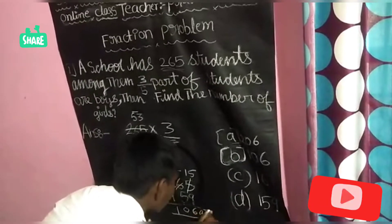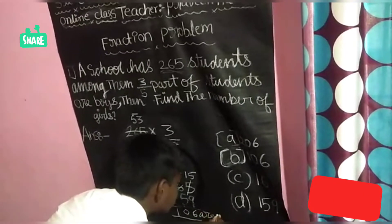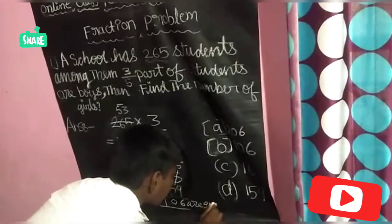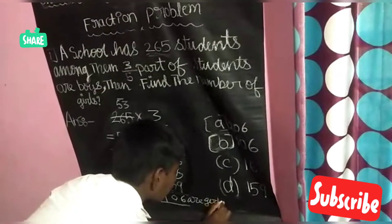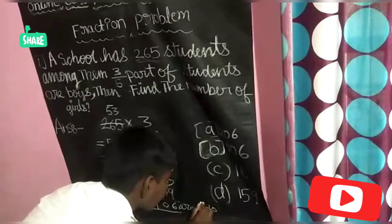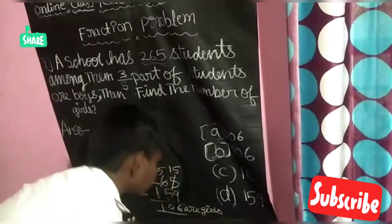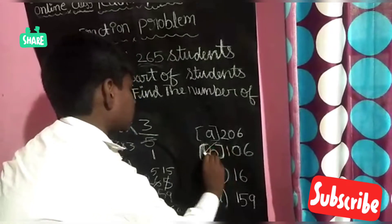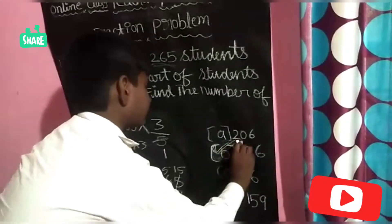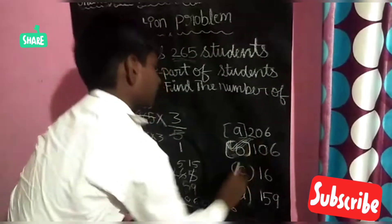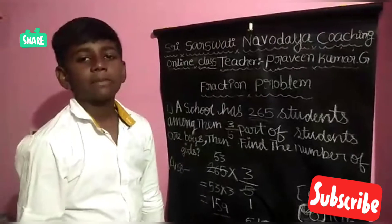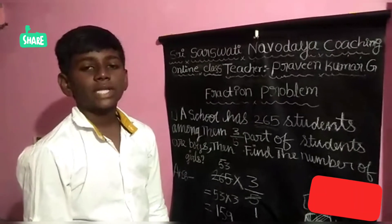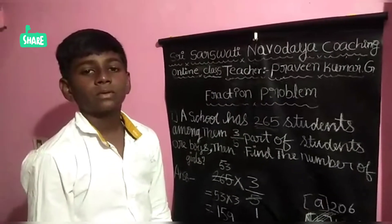106 are girls. 159 are boys, and 106 are girls.